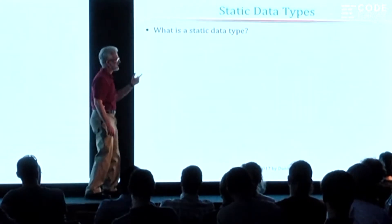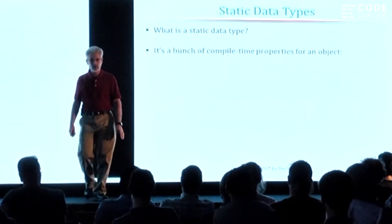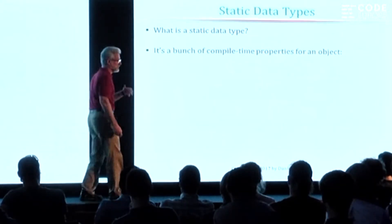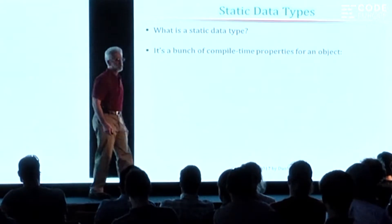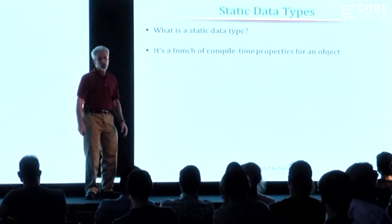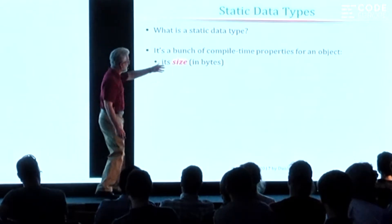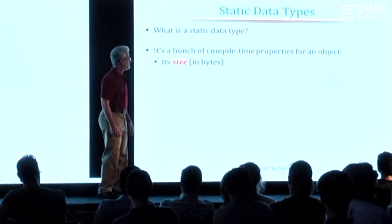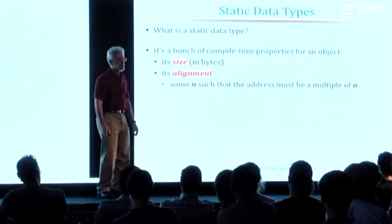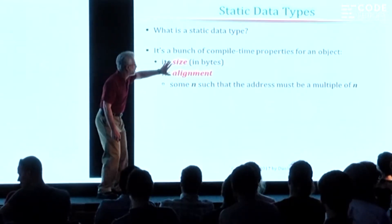So, what is a static data type? It's actually a bunch of compile-time properties for an object. What does it really mean when you say something is an int or a pointer? The compiler, for the built-in types, has a knowledge base of what these properties are — they're built in. For example, one of the basic pieces of information when you say 'what's an int' is it has a certain size in bytes and a certain alignment in bytes — those are the mechanistic, low-level details.